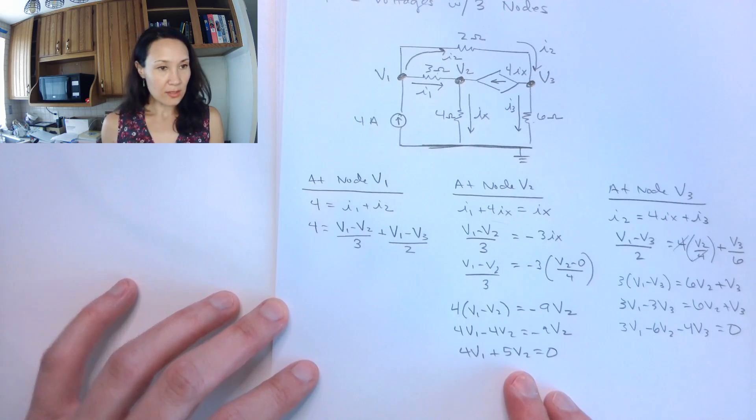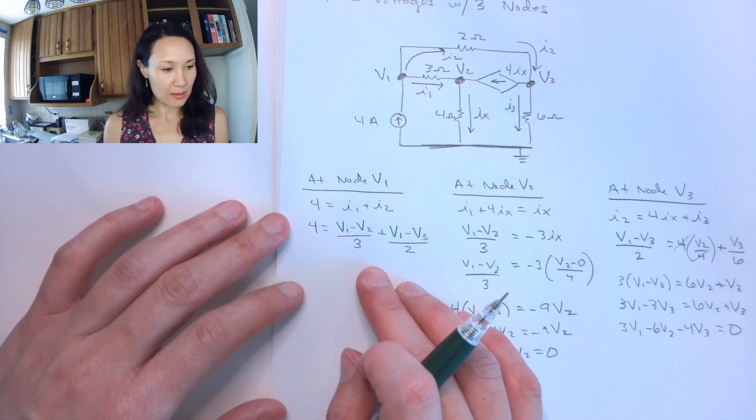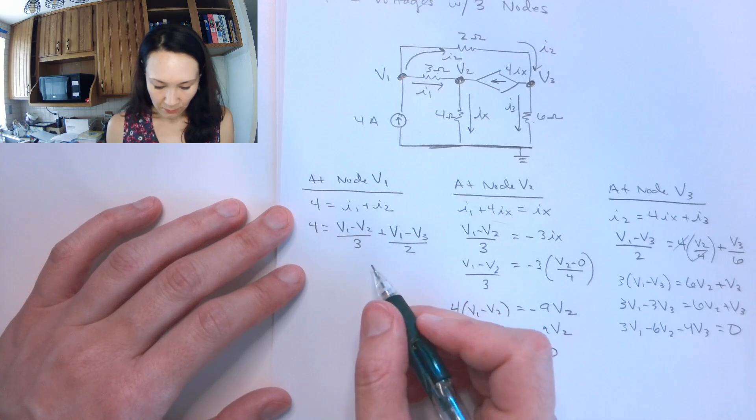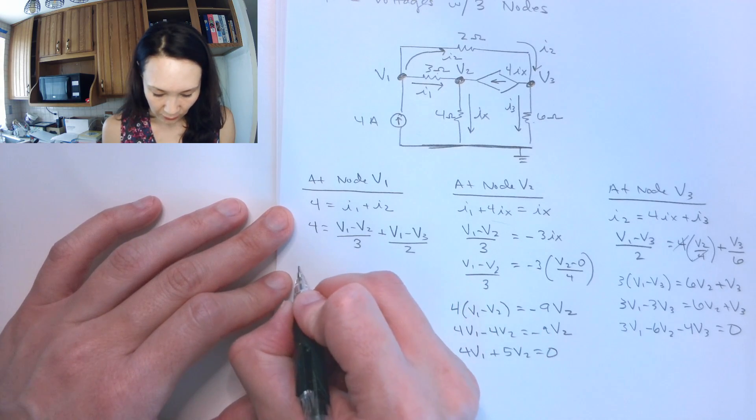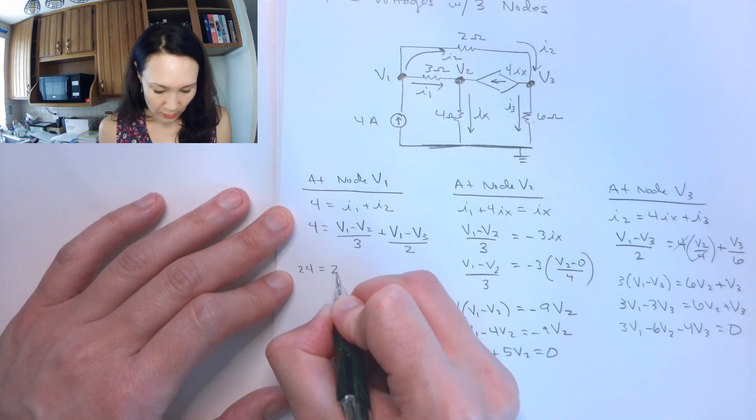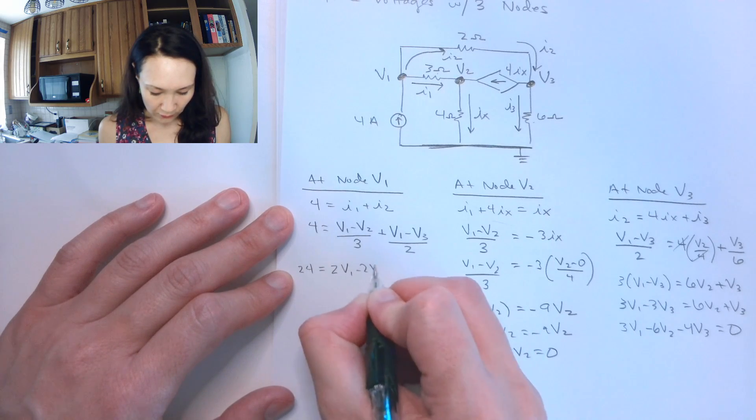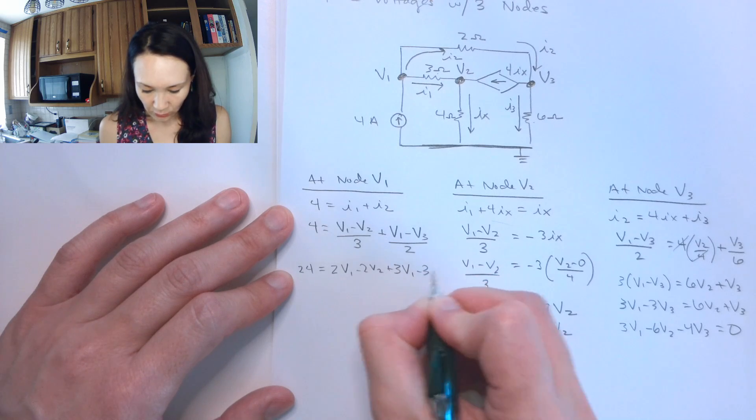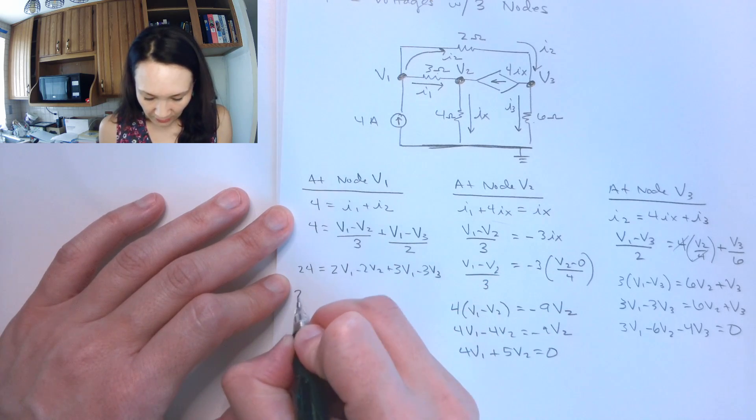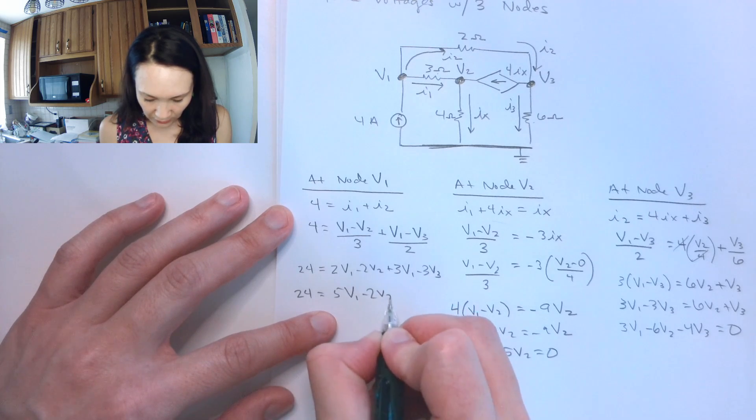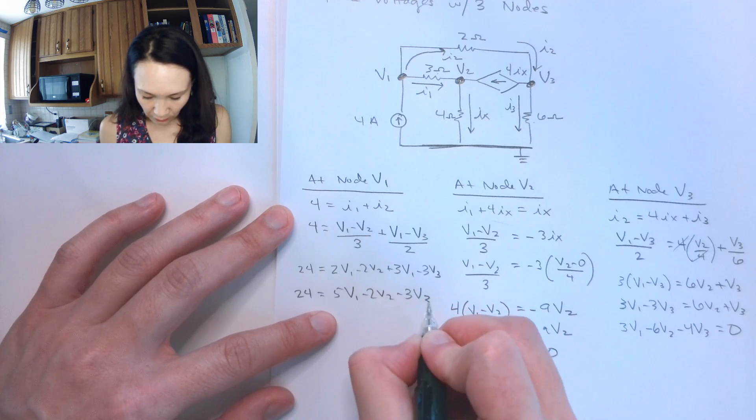This guy is also in standard form. Let's go ahead and put this thing in standard form. So if I multiply everything by 6, this will give me 24 is equal to 2 V1 minus 2 V2 plus 3 V1 minus 3 V3. I'm going to combine like terms. So I get 5 V1 minus 2 V2 minus 3 V3.